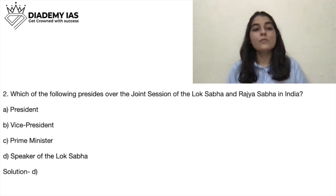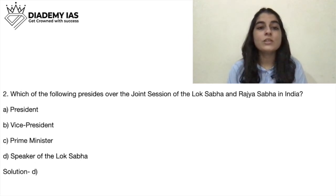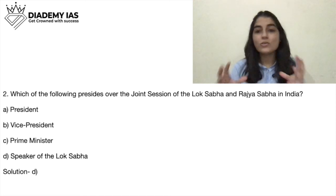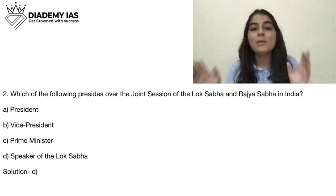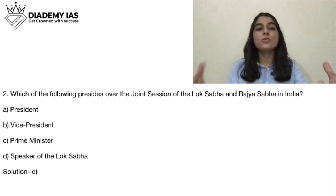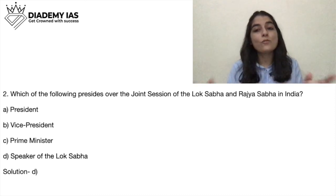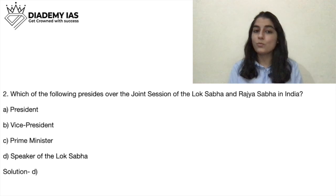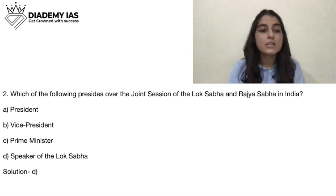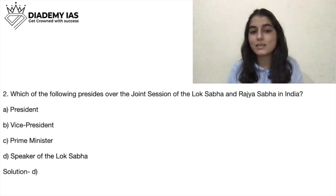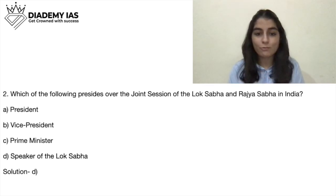Second MCQ: 'Which of the following presides over the joint session of Lok Sabha and Rajya Sabha in India?' A joint session is called by the president, but it is presided over by the Speaker of Lok Sabha. So the answer is D — the Speaker of Lok Sabha. This was all about Chapter 5. Thank you.